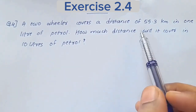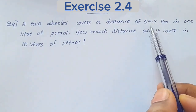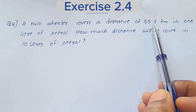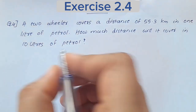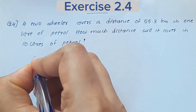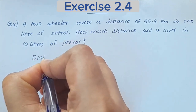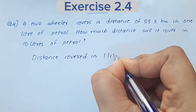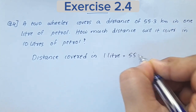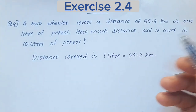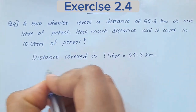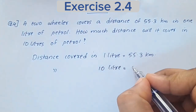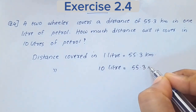How much distance do we cover in 1 liter of petrol? How much distance do we cover in 10 liters of petrol? How much distance do we cover in 1 liter? Distance in 10 liters is equal to 55.3 multiplied by 10.